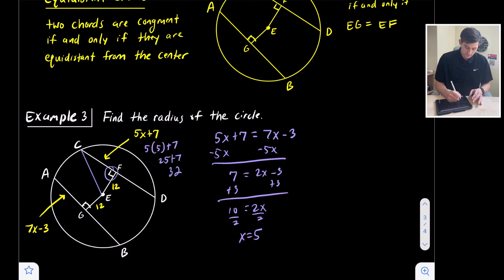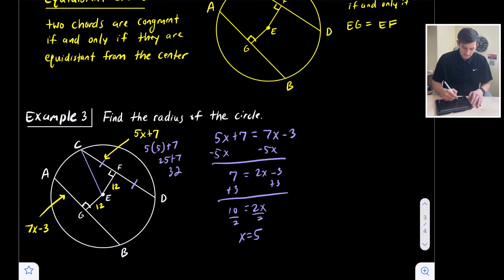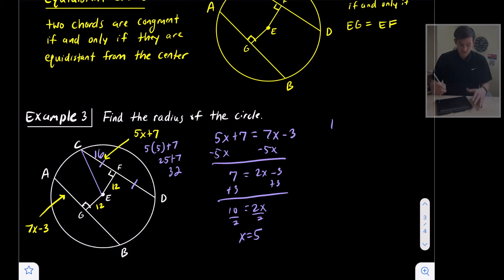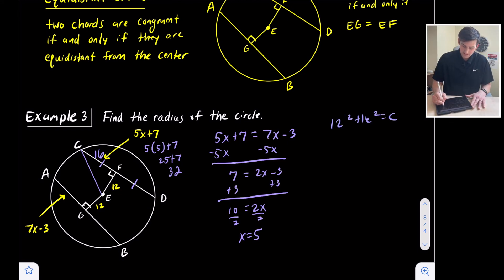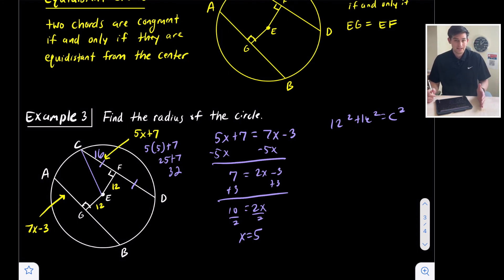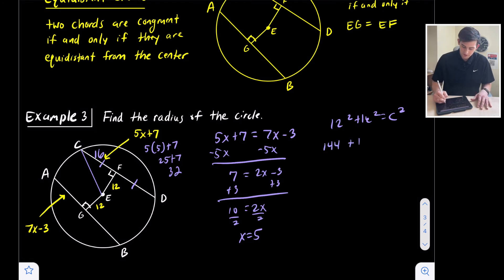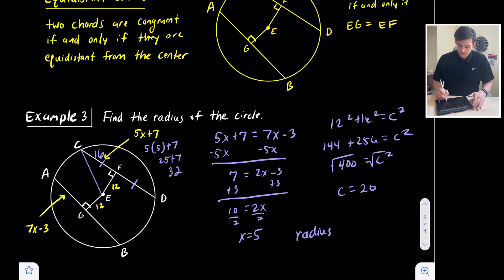Since the segment is perpendicular, it bisects the chords. If the entire chord is 32, this half-distance is 16. So we have 12² + 16² = c². That's 144 + 256 = c², giving 400 = c². Taking the square root, c = 20. This is a Pythagorean triple (12-16-20). So the radius of our circle is equal to 20.